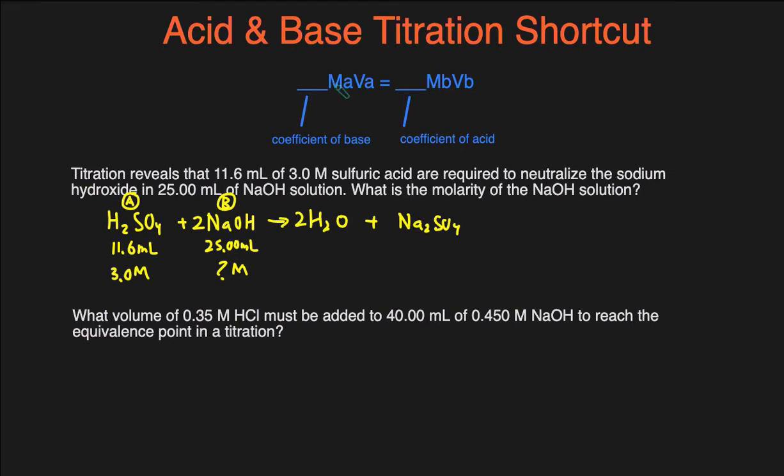So then we can use the equation. So you see we have to cross the coefficients. We essentially cross the coefficients, so we have 2 times MaVa equals MbVb. So the coefficient of the base goes to the acid side, and then the coefficient of the acid goes to the base side. Now that we have the equation, we can just plug in the numbers.